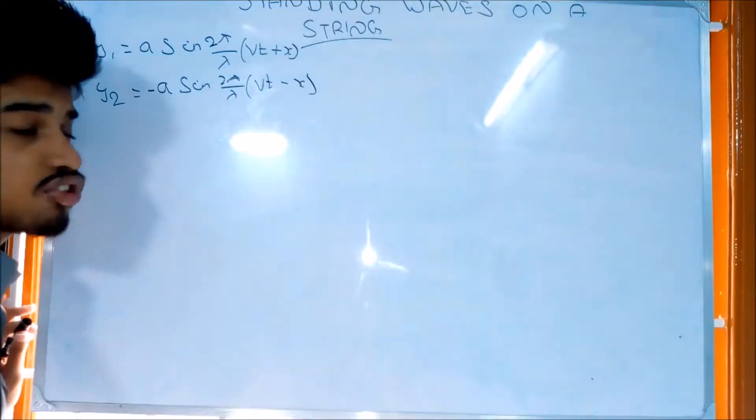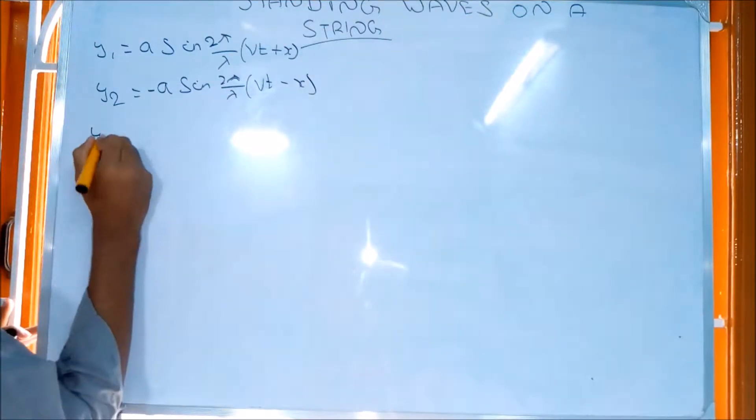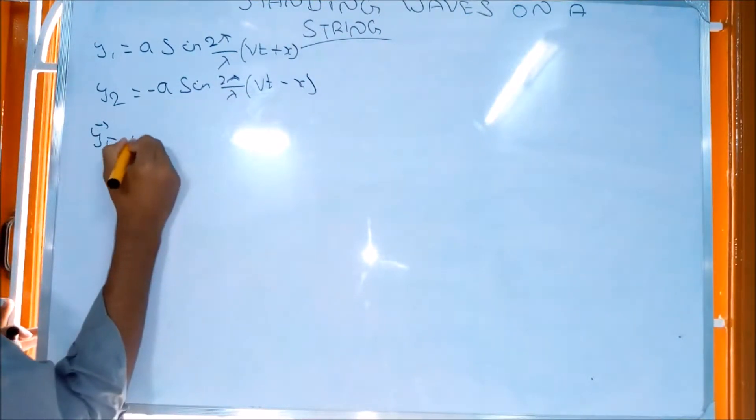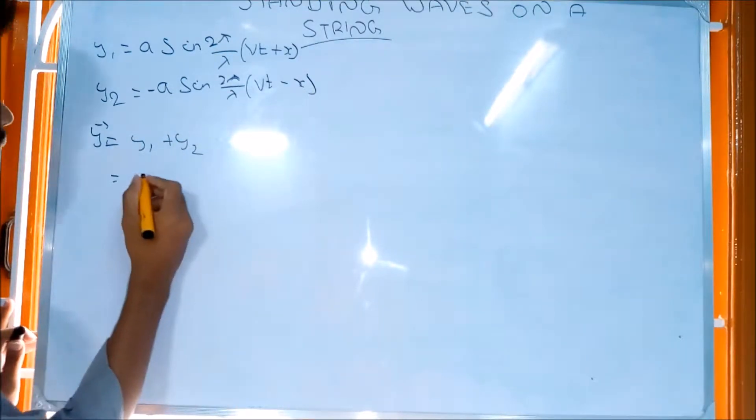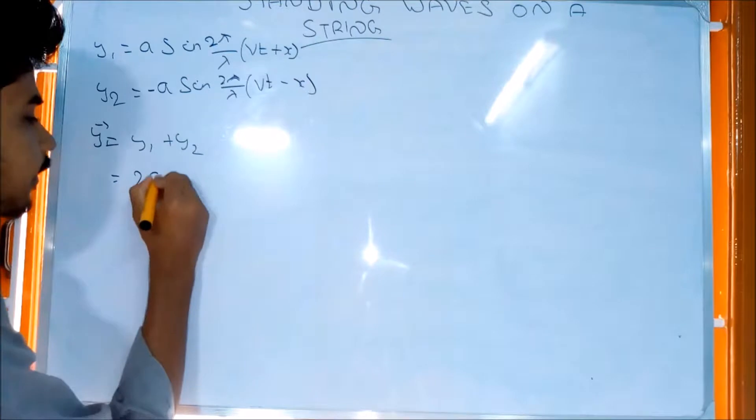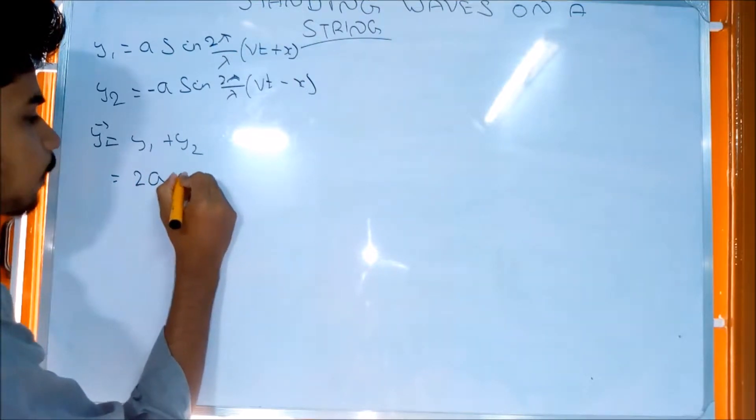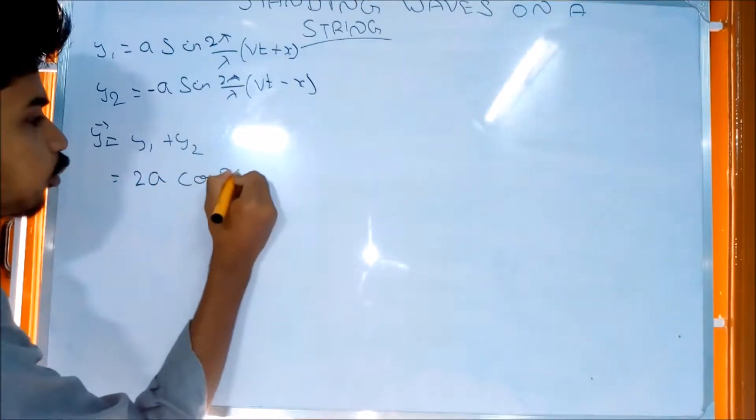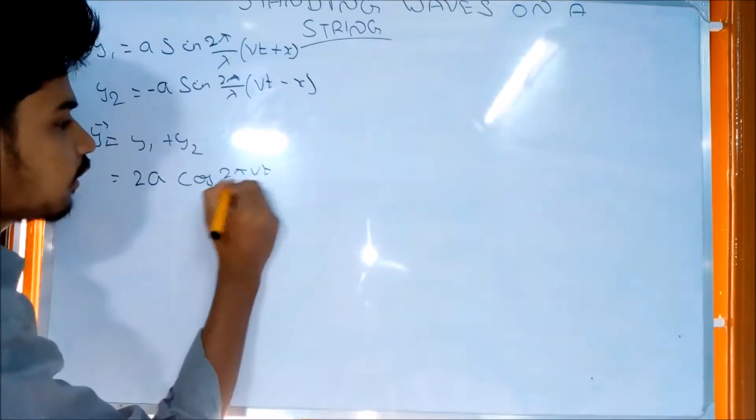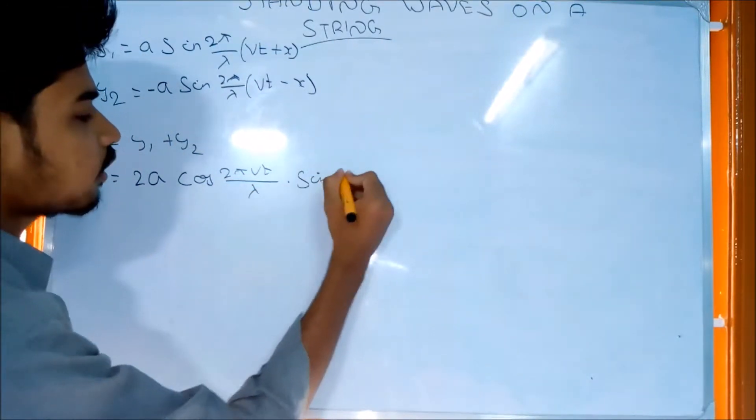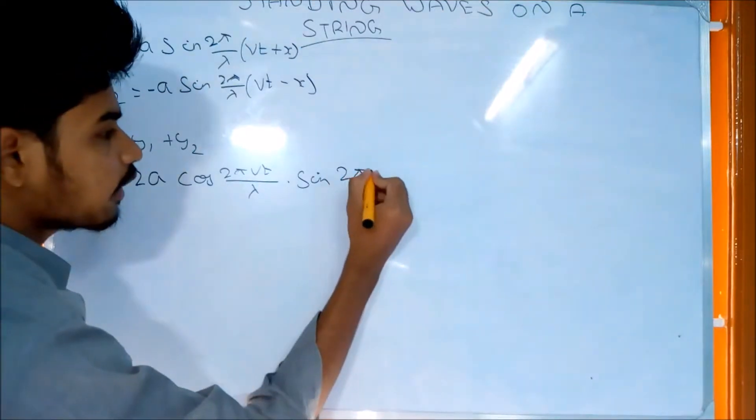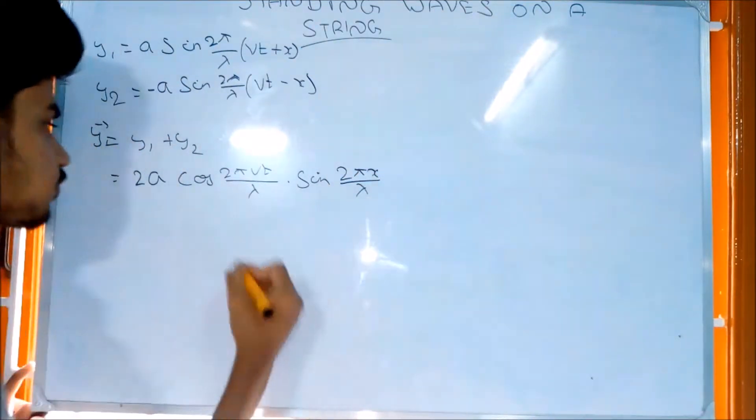Using the superposition principle, y equals y1 plus y2. When we add the two waves, we get 2a cos 2πvt/λ times sin 2πx/λ.